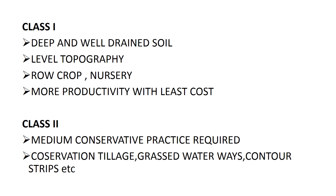In Class 2, we can go for row crop but we need conservative practices. We should manage land resources like soil, water, and nutrients. For example, if there is more precipitation, we should go for practices that increase infiltration rate and ensure proper drainage. Some conservative practices for Class 2 include conservation tillage, grassed waterways, and continuous tree cover, and we can grow row crops there.